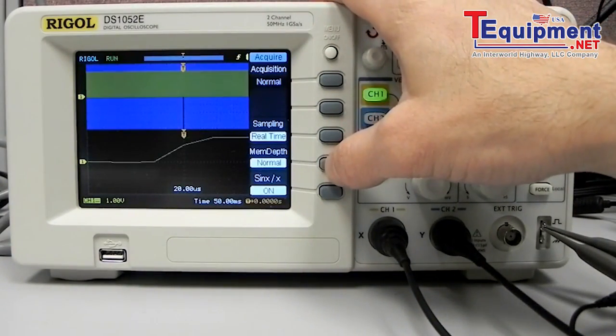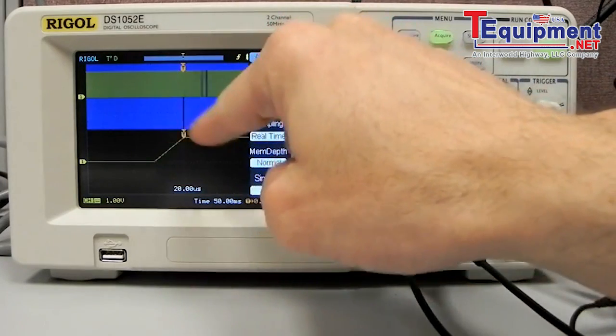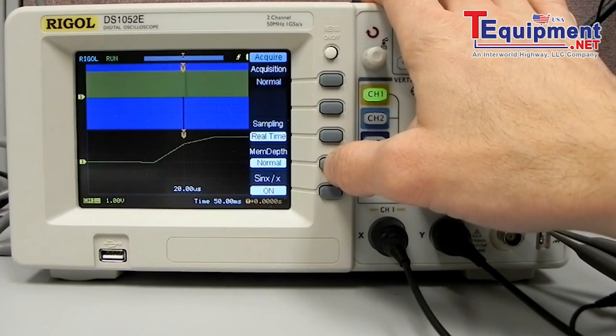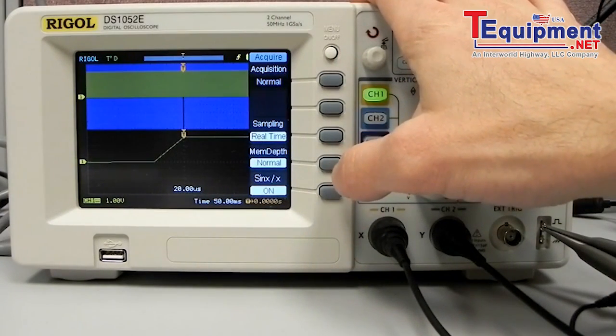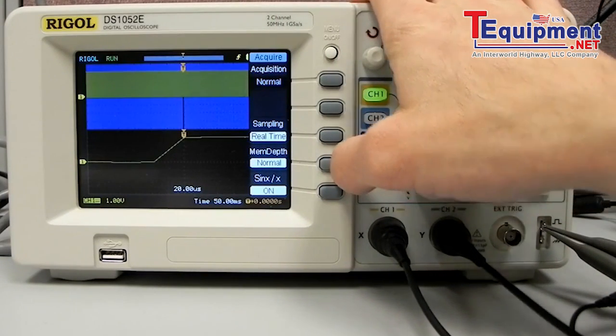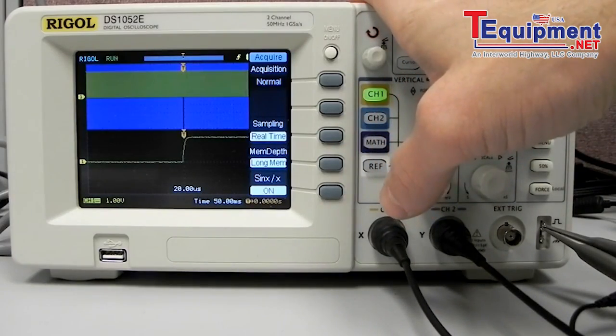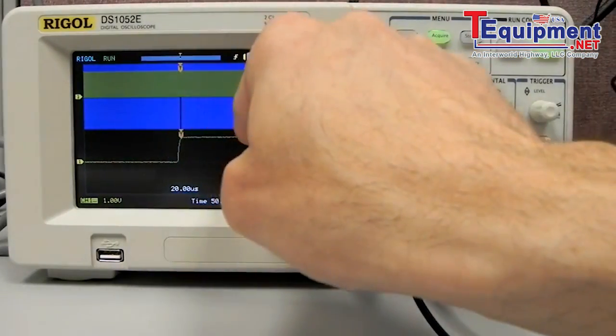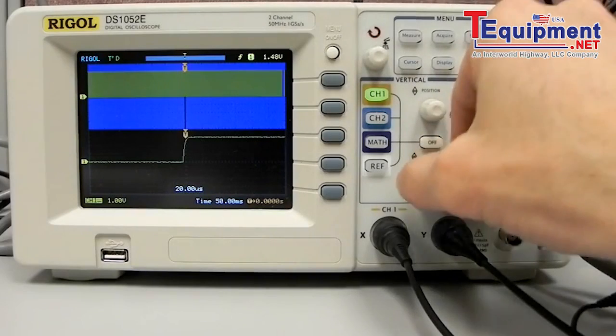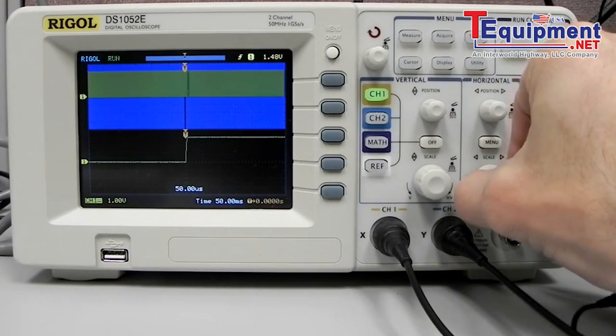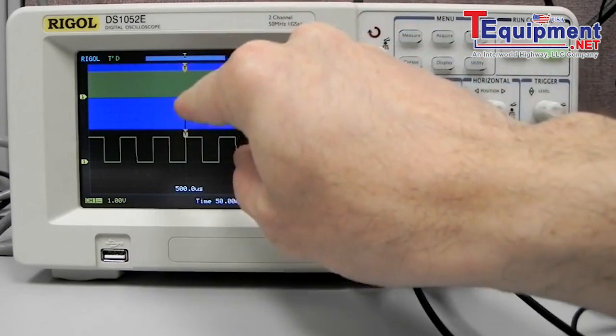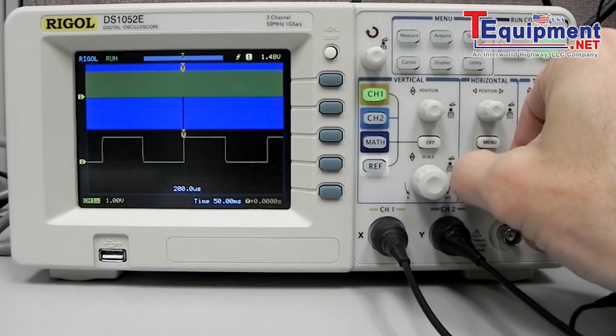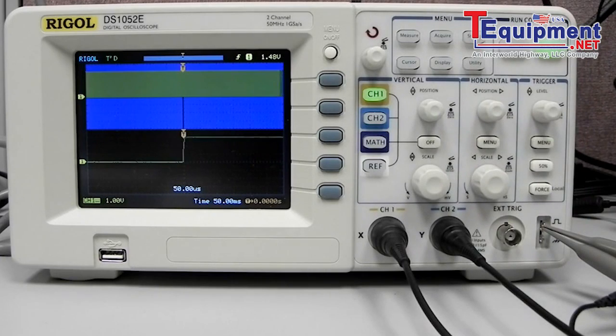You can see now it's filled in quite a bit. Let's go back to normal. As you can see we don't have very much resolution in normal mode because we're acquiring so many data points over 50 milliseconds. With this particular scope series we can go to long memory that's going to give us a million points. You can see it fills in very nicely and we can change that resolution of the zoom window.